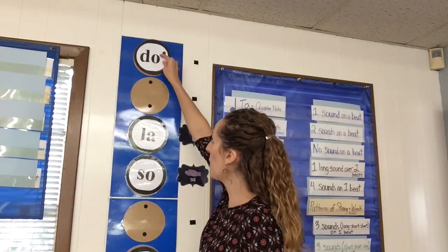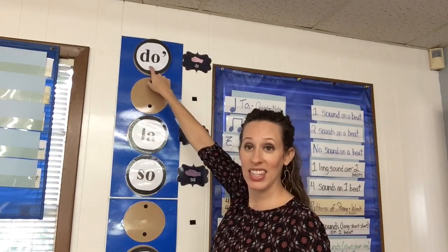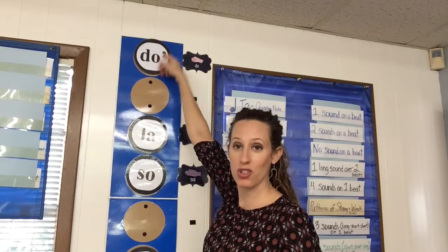And so now we can put it up high. Do! There's the hand sign. And this doe has an apostrophe so that we know that it's the high one when we're reading it in notation versus the low one.